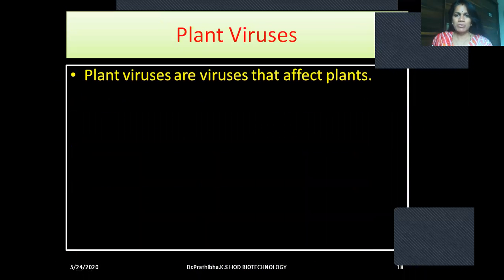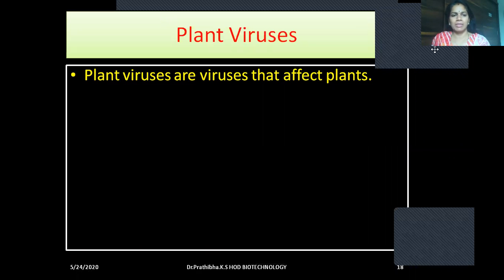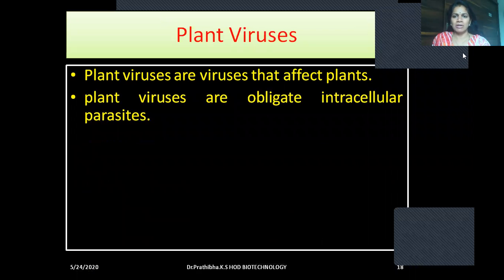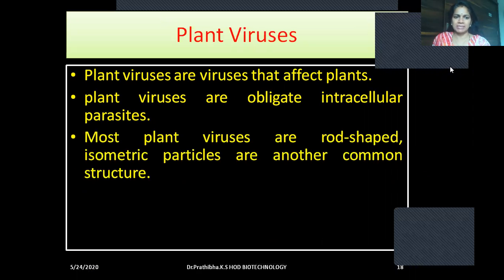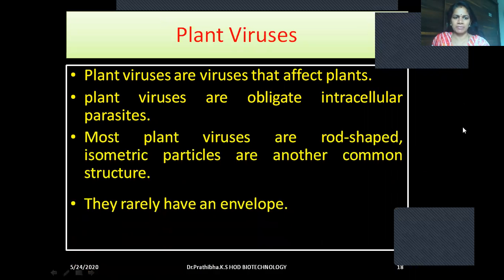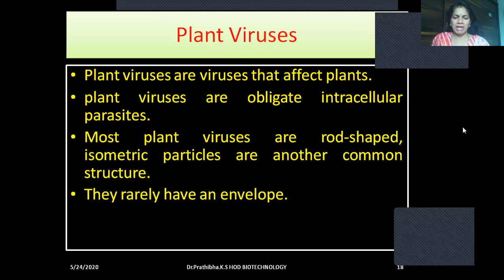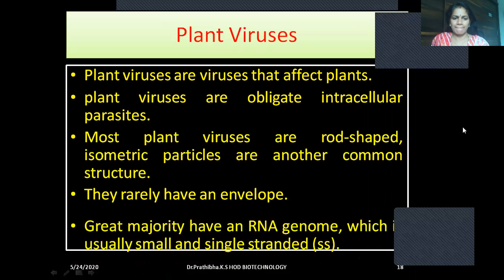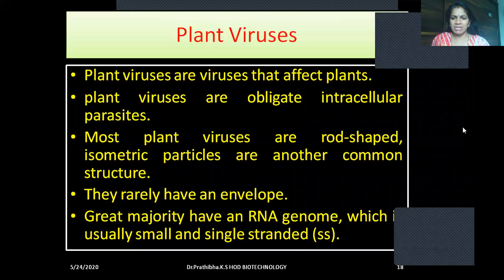Plant viruses are the viruses that affect plants. Plant viruses are obligate intracellular parasites. Most plant viruses are rod-shaped; isometric particles are another common structure. They rarely have an envelope. The great majority have an RNA genome which is usually small and single-stranded.